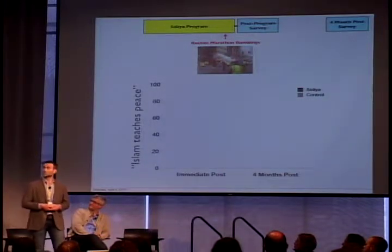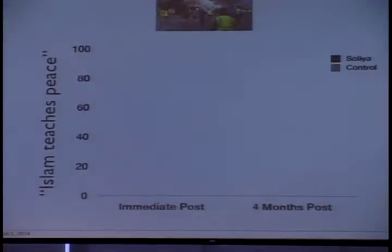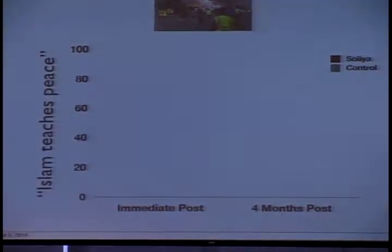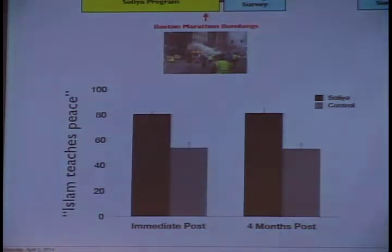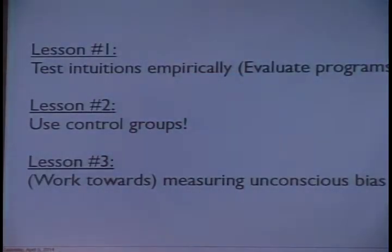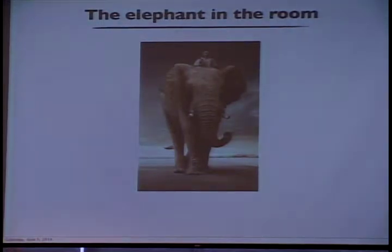You could look at longer-term effects too. Once the Boston Marathon bombings happened, we included another measure: your belief about how much Islam teaches peace versus violence. We can test this right after the program and see how sustained these beliefs are. Soliya participants were at 80 on a scale of 1 to 100 — that looks stable, but what does it mean without a control group? When we look at the control group, we can see there's a positive outcome. Without a control group, we can't make any inference. So a final lesson is that we should work towards measuring unconscious biases — measuring what's going on with the elephant and not just the rider.